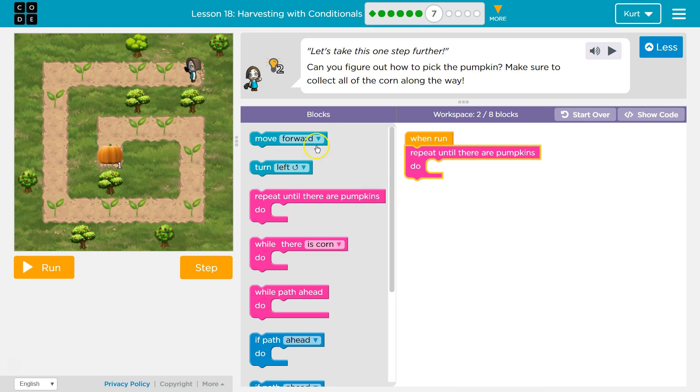Now, what am I going to do? I need to get corn along the way. Alright, so I want to move forward. And I'm assuming the corn can be clustered, because that's what they've been doing.